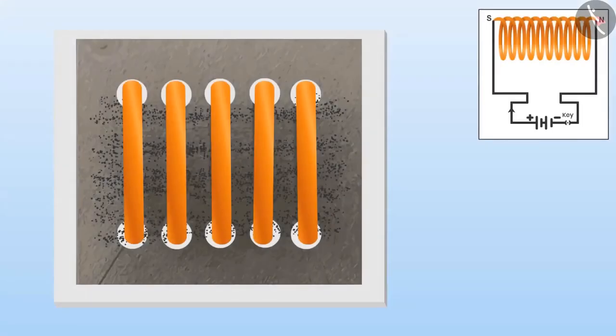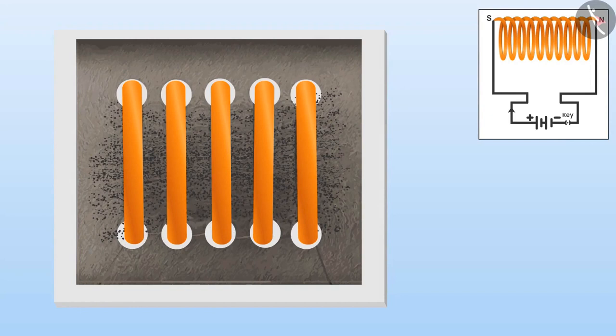If we apply electricity through the solenoid, then iron fillings will make the pattern here too. That means there are magnetic fields too. To find the direction of the field lines, we will look at the direction of current at both the sides.